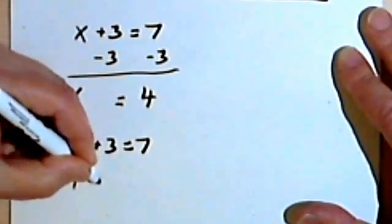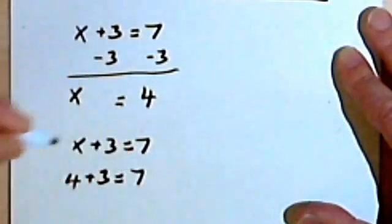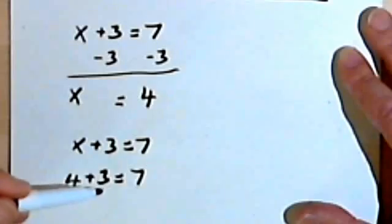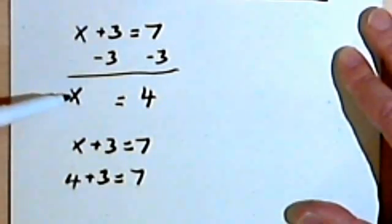So 4 plus 3 equals 7. And 4 plus 3 does equal 7, so my solution is correct.